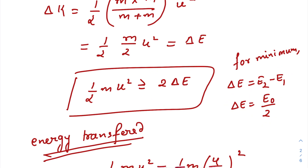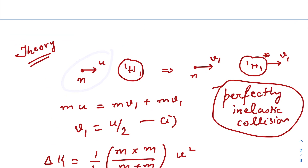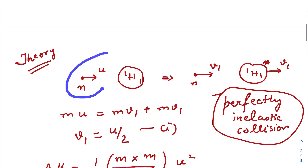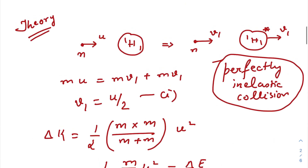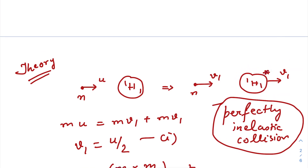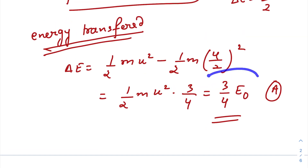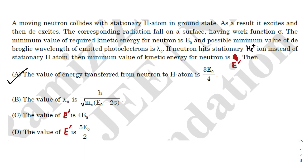For option A — energy transferred from the neutron to the hydrogen atom: the initial KE of the neutron is ½mu², and the final KE is ½m(u/2)². The difference is utilized to increase the kinetic energy of the hydrogen atom as well as to excite it. Subtracting: ½mu² − ½m(u/2)² gives ¾ · ½mu², which equals ¾E₀. So option A is correct.